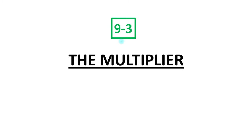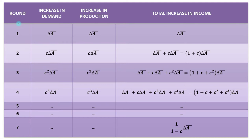Hello students, today's topic is section 9.3: The Multiplier. Here you can see four columns: round, increase in demand, increase in production, and the last one is total increase in income. Let's start with the first round. Suppose that aggregate demand increases by change in A-bar. To meet this increase in demand, production has also to be increased by change in A-bar, which creates an equal increase in income of change in A-bar.